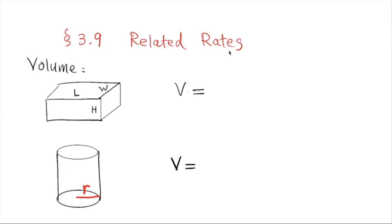The first one is going to be a rectangular box. For a rectangular box with length L, width W, and height H, the formula for the volume is equal to length times width times height.